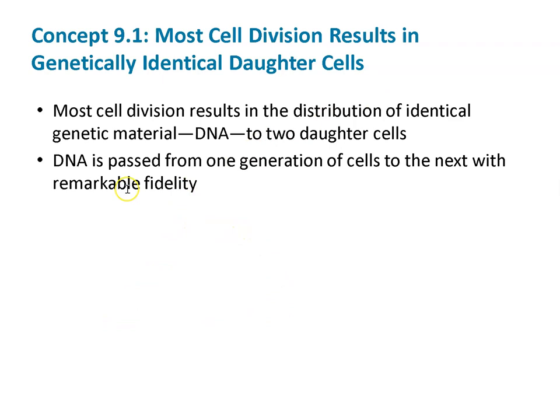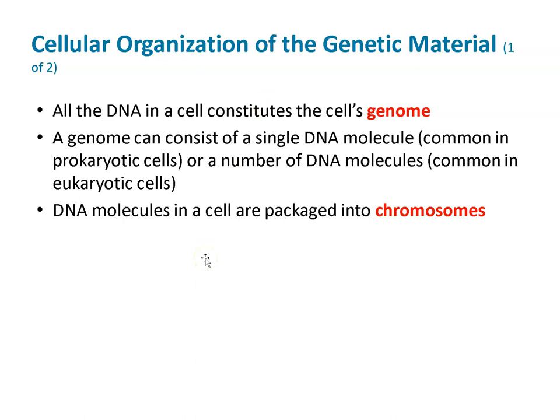Most cell division results in the genetic distribution of identical DNA material to daughter cells. DNA is passed from one generation to the next. Your DNA — with a few changes due to meiosis and crossing over, which we'll talk about later — came from mom and dad: 23 chromosomes from mom and 23 from dad. We'll talk about what happens when those numbers are different. All the DNA in a cell constitutes a cell's genome. A genome can consist of a single DNA molecule, as in prokaryotes, or multiple ones as common in eukaryotic cells.